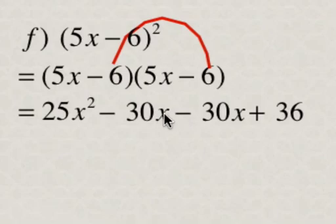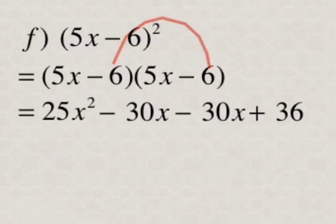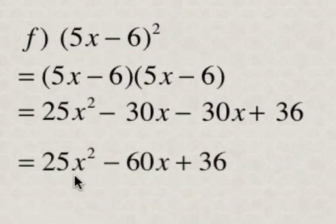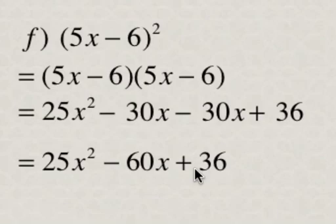And we can simplify here — the negative 30x minus 30x is going to be negative 60x. So in simplest terms, this is going to be 25x squared minus 60x plus 36.